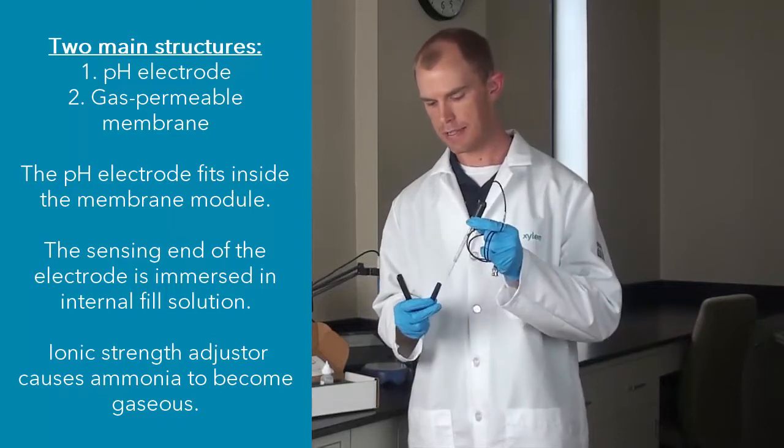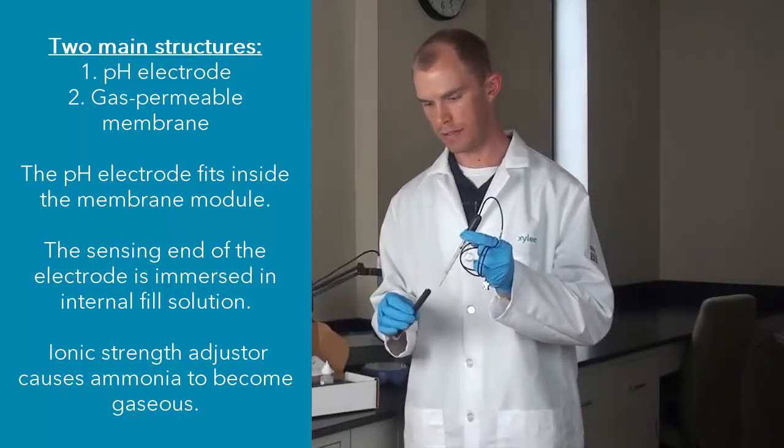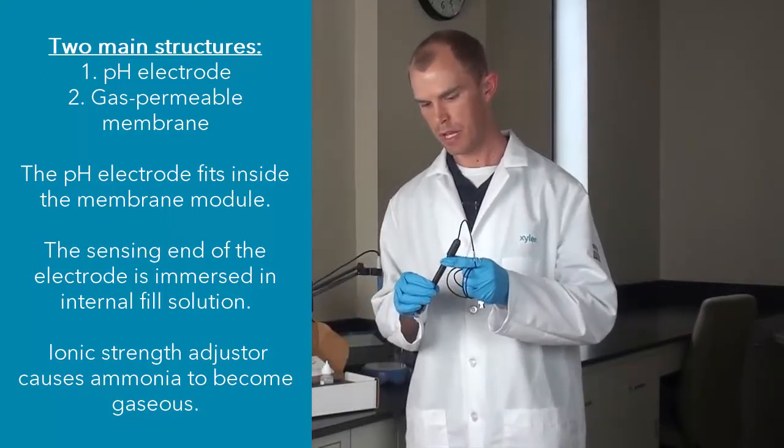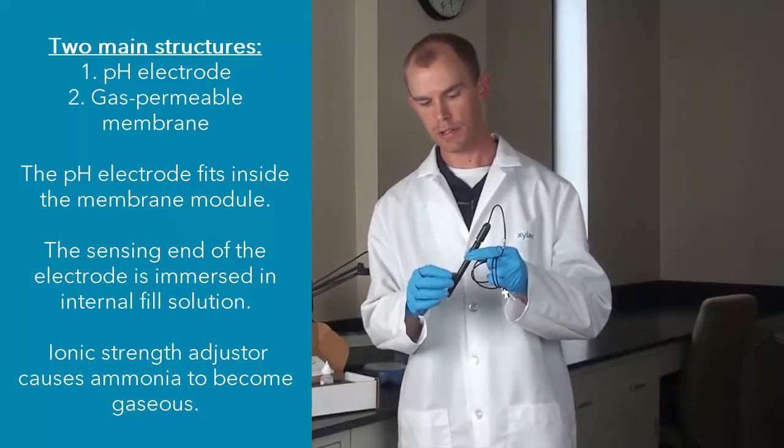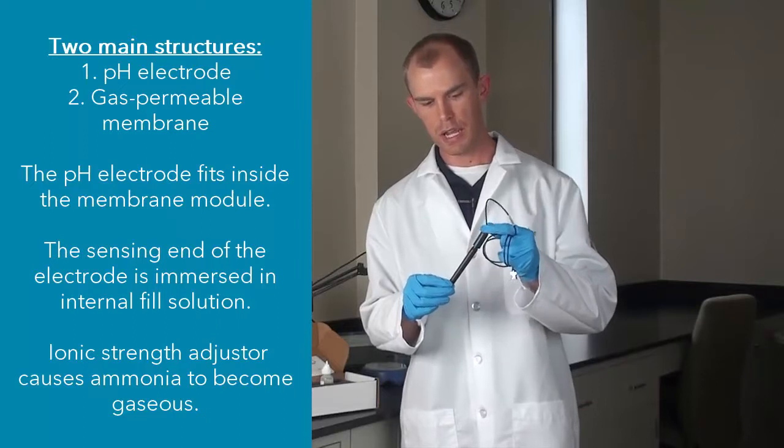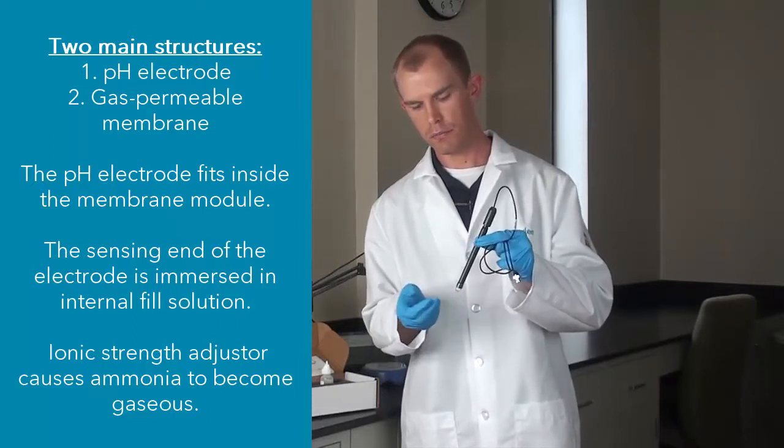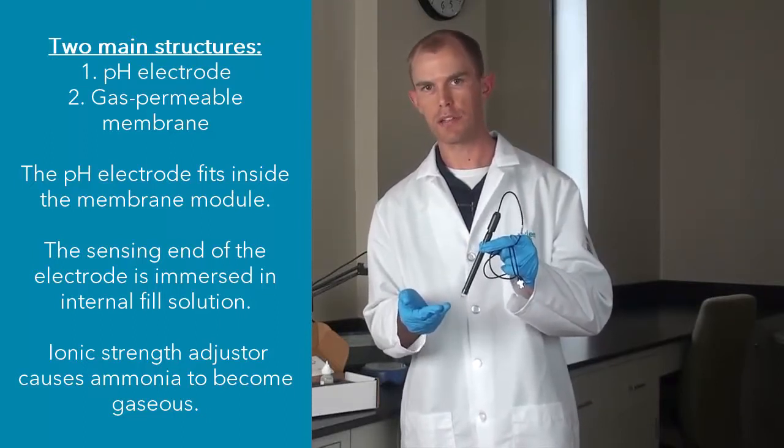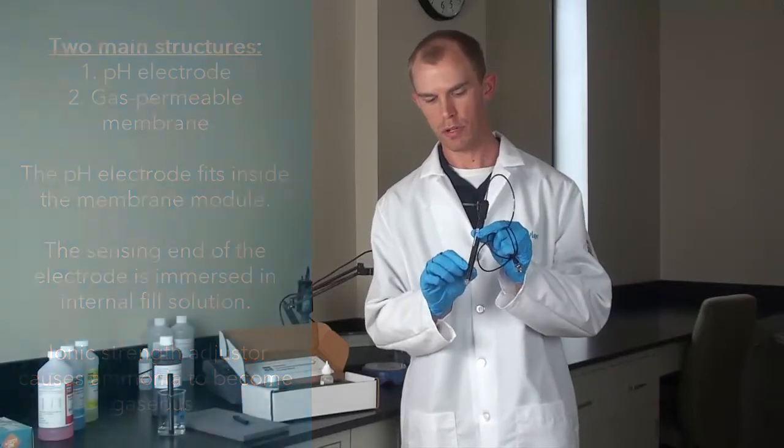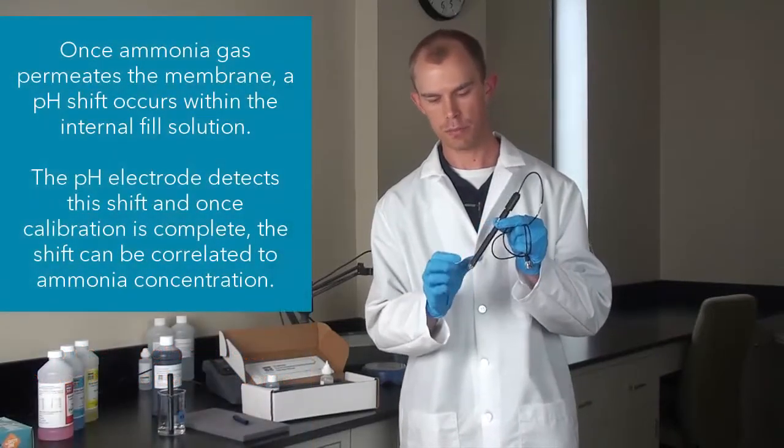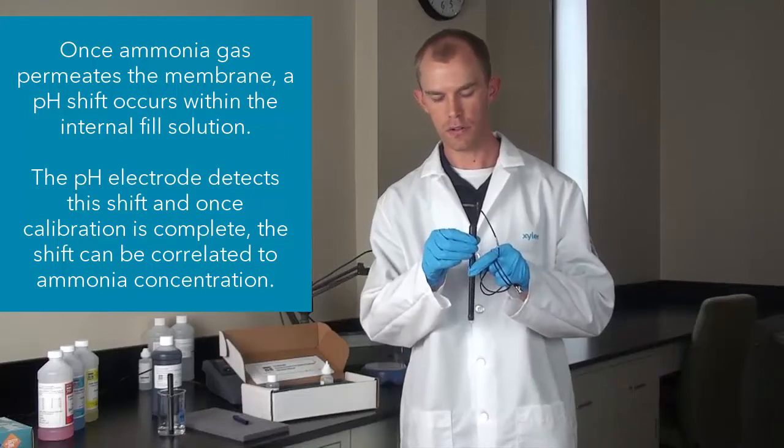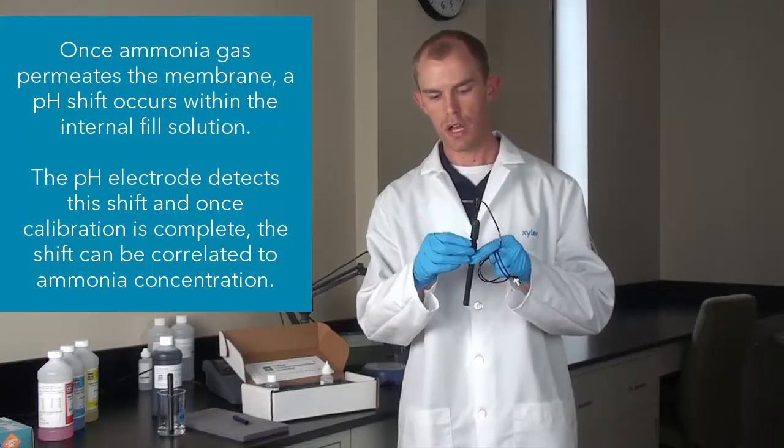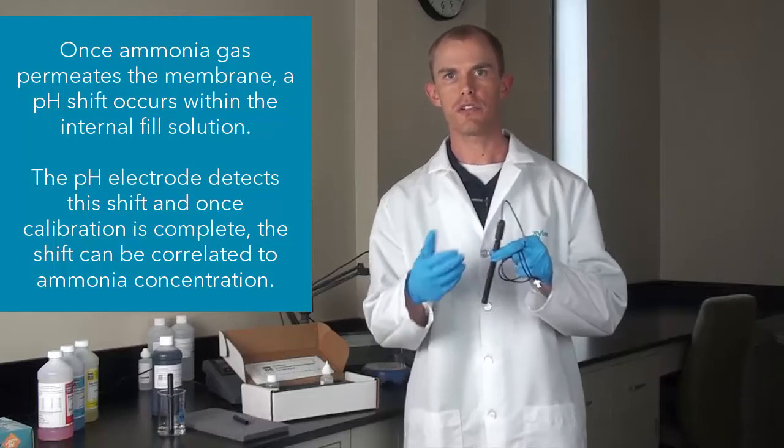The pH electrode fits inside the membrane module, and internal fill solution is placed in the membrane module. Ammonia gas within the sample will permeate through the membrane at the tip of this module and go into the module itself, where it will cause a pH shift within the internal fill solution.